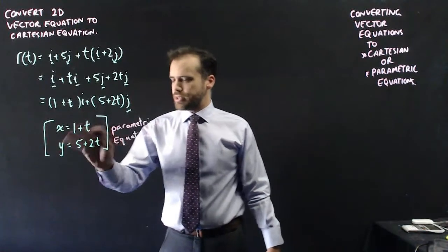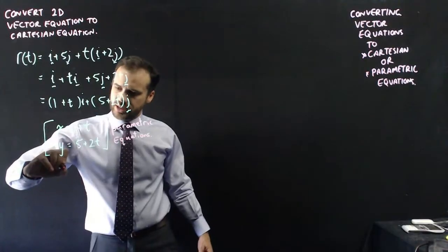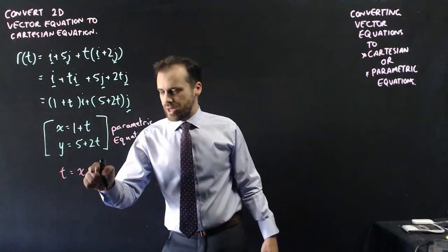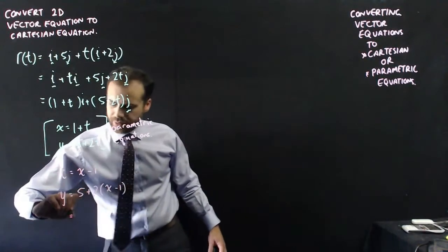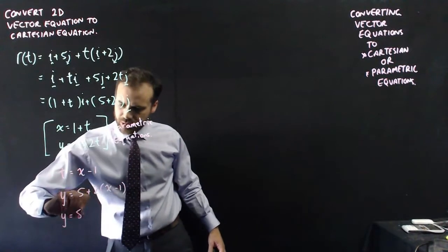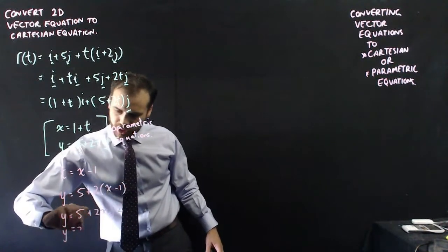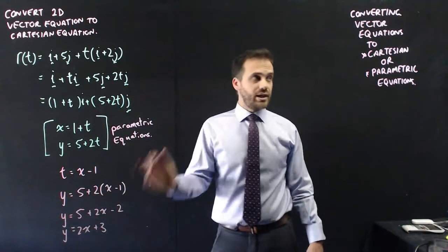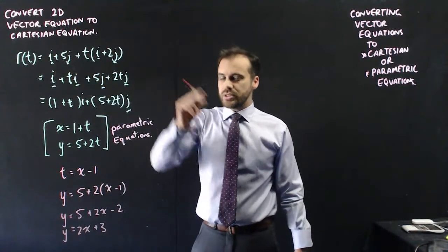We rearrange one to make t the subject. So with this equation here we can say that t equals x minus 1, and then we sub that into this equation. The final step here is just to pretty it up a little bit, and we can say that y equals 5 plus 2x minus 2, so y equals 2x plus 3.